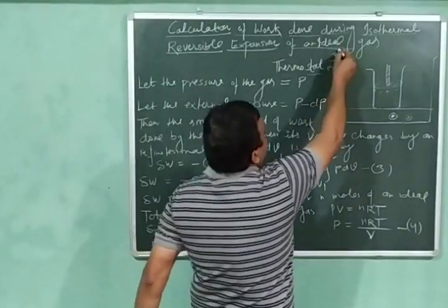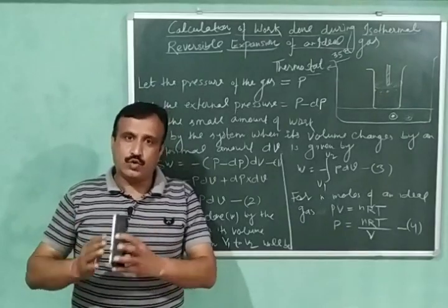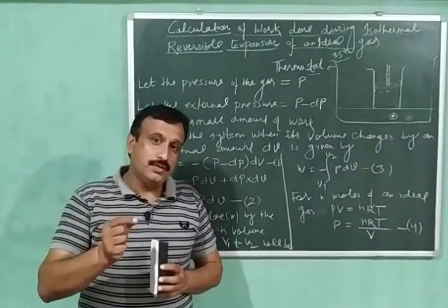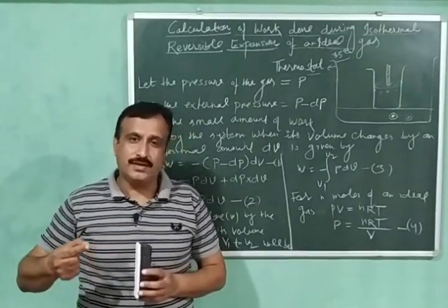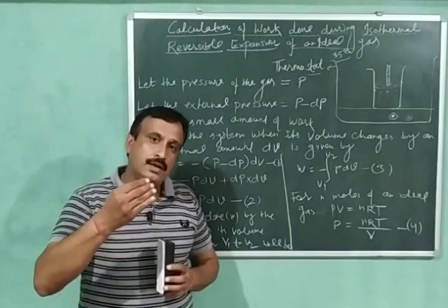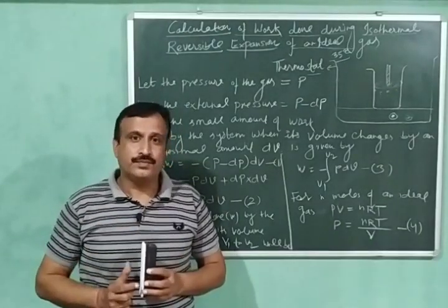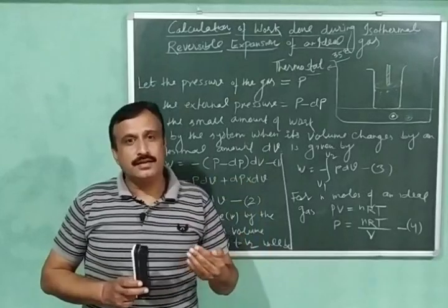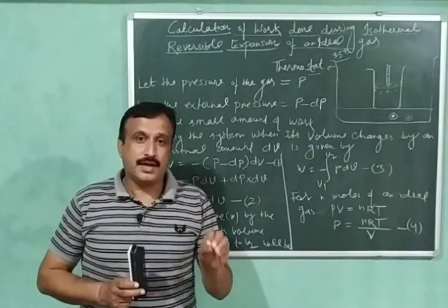Suppose we have maintained the temperature of the thermostat at 35 degrees Celsius. This temperature will be maintained throughout the process. The reversible expansion of the ideal gas is carried out infinitesimally slowly, and to carry out this process the external pressure should differ slightly from the internal pressure. Only then this slow expansion is possible. The gas will expand slightly, equilibrium will be restored, and external and internal pressure become equal. Then again the external pressure is decreased by a small amount and the gas expands slightly again. In this way reversible expansion is carried out very, very slowly.